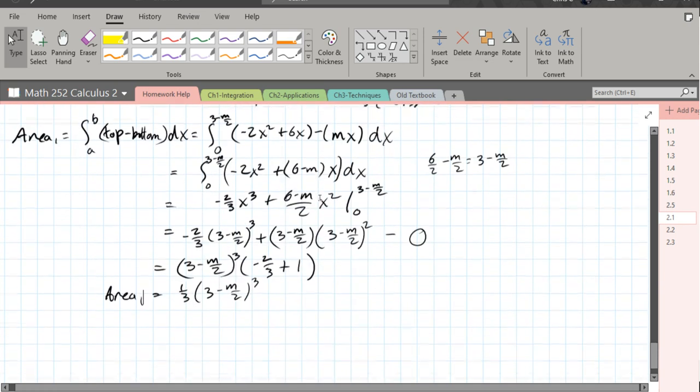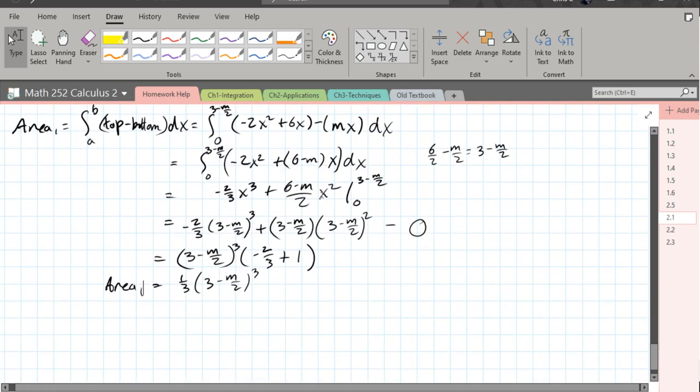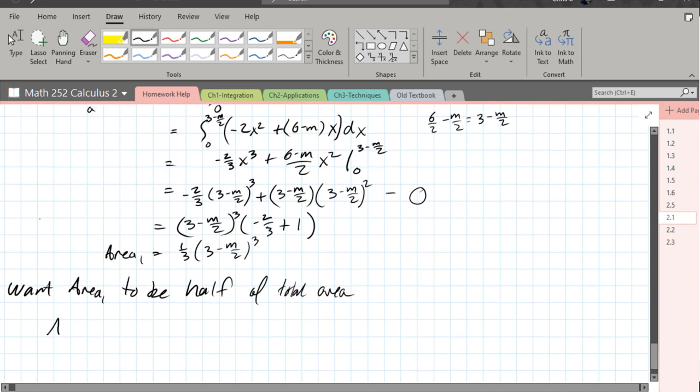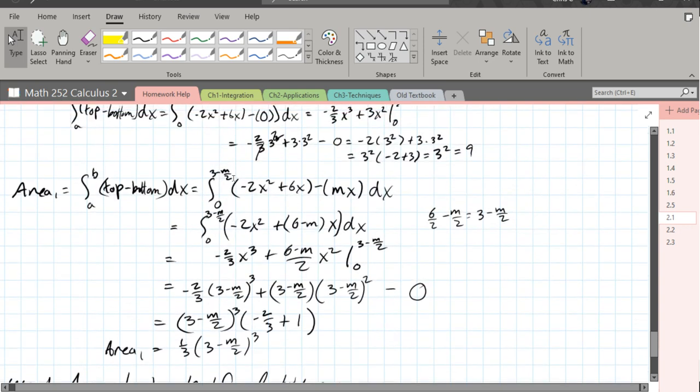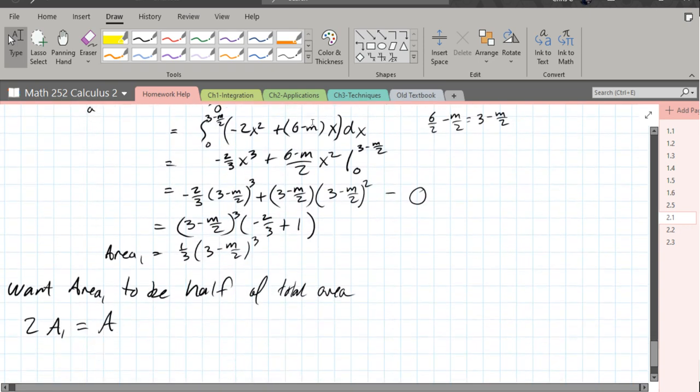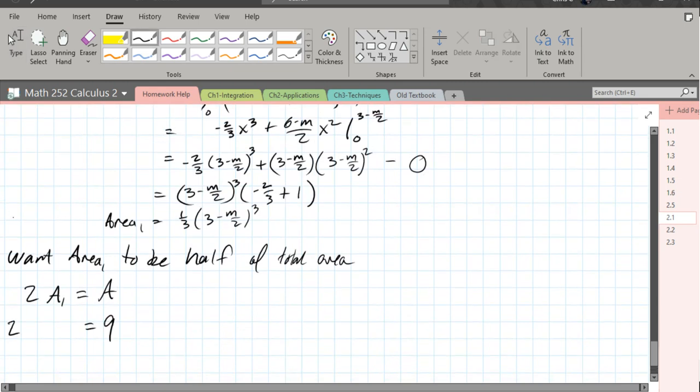And we got total area. So rewind back to what I was saying like 7 years ago. We have to set, we want area 1 to be half of the total area. Well, there's two ways to do it. Let's go with 2 times a1 equals a. So 2 times the small area equals the big area. So we got our big area is 9 up there. Our small area is a little bit uglier. So it's 2 times 1 third, 3 minus m over 2 cubed.